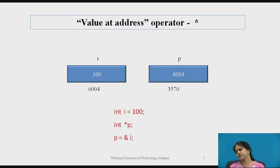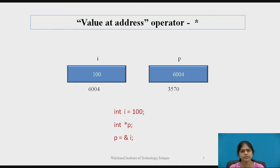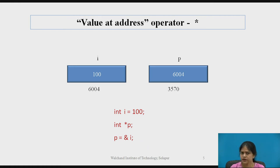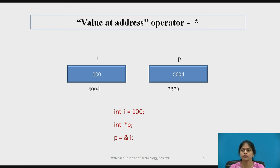Now let's see C language instructions. We have declared integer variable i and assigned value 100. Then we declared a pointer variable of type integer: int *p. Inside this pointer variable p, we are storing the address of i. The data type of i is integer, but what is the data type of p? Its data type is unsigned integer because it is storing an address. An unsigned integer also occupies 4 bytes of memory on a 32-bit processor.